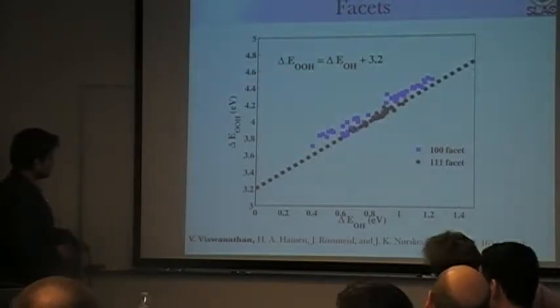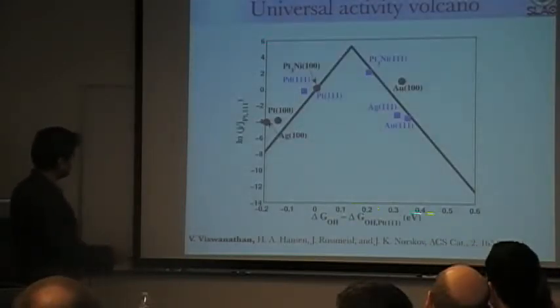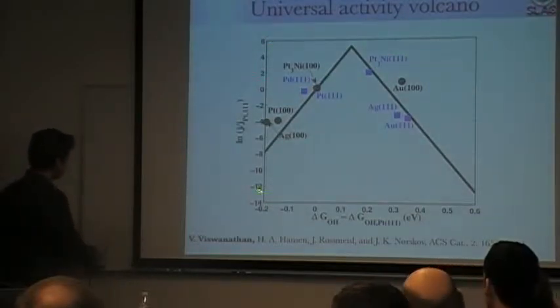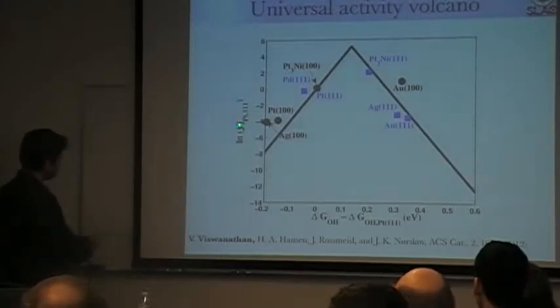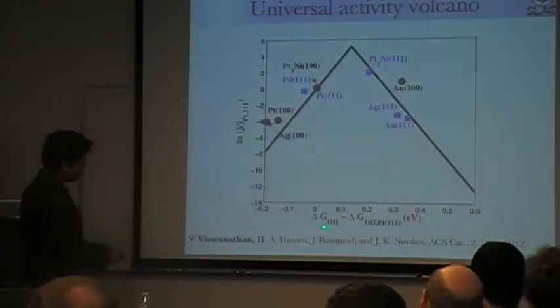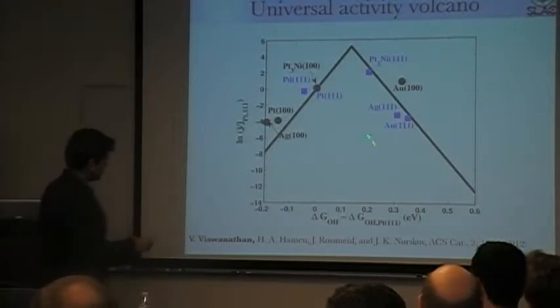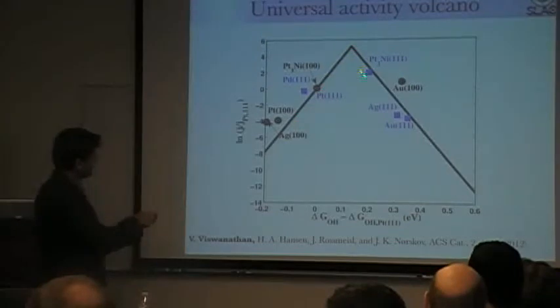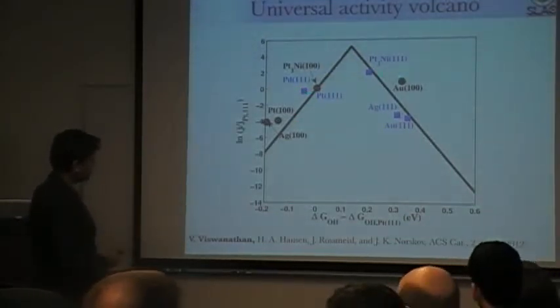And this leads to what is a universal activity volcano. This activity volcano sets the limit for how good your fuel cell catalyst can be. What I plot here is the log of the current, normalized to platinum one-on-one, and free energy of hydroxide, which is the descriptor, and free energy of hydroxide relative to platinum one-on-one. What you see here is this activity volcano essentially sets the limit. So the black line is the theoretical prediction, and the dots and the squares are the experiments.